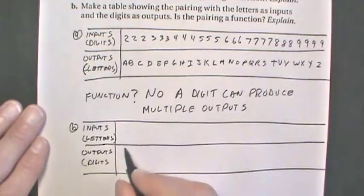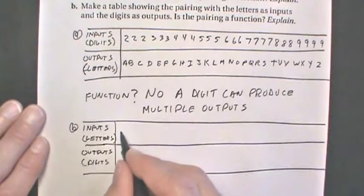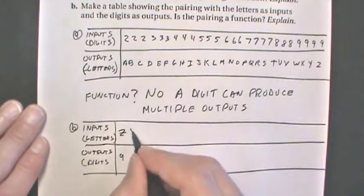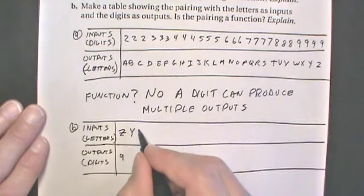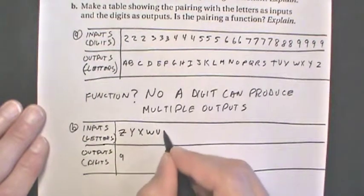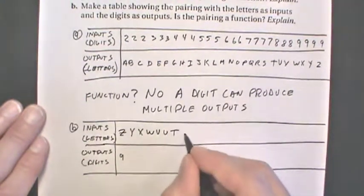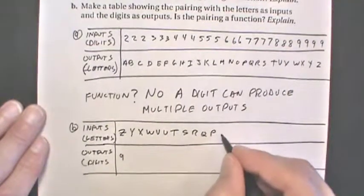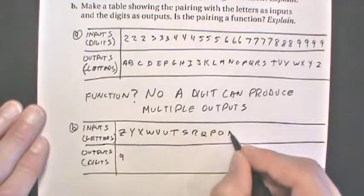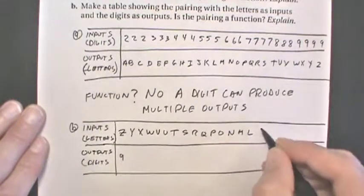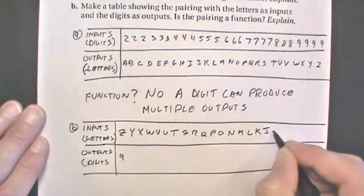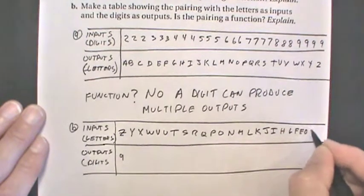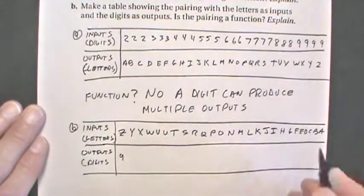Okay, so for inputs, let's start with a Z. Z can give us a 9. Y, let me write these out here. X, W, V, U, T, S, R, Q, P, O, N, M, L, K, J, I, H, G, F, E, D, C, B, A. Hopefully you didn't miss any there.